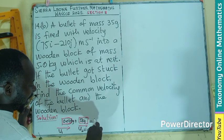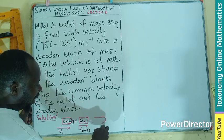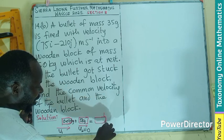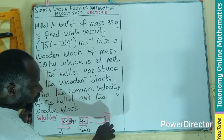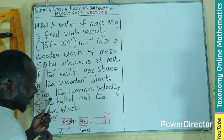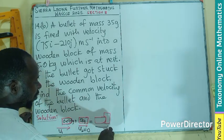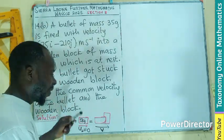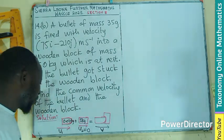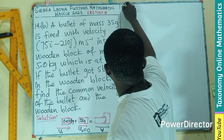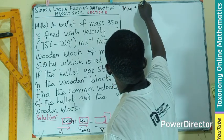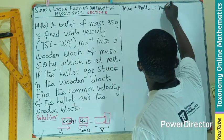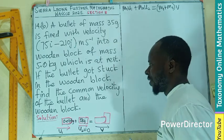When done together, the bullet is now stuck into the wooden block. They are going to be stuck together with a common velocity V. From the law of conservation of momentum, M1U1 + M2U2 equals (M1 + M2) multiplied by the common velocity V.